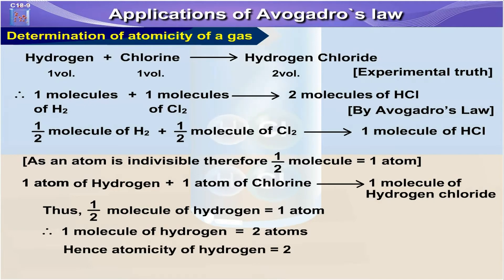Hence, atomicity of hydrogen is equal to two. Similarly, atomicity of chlorine is two as well.